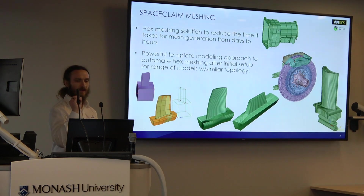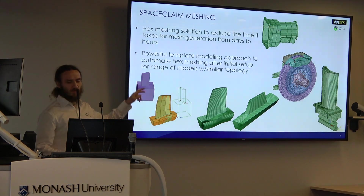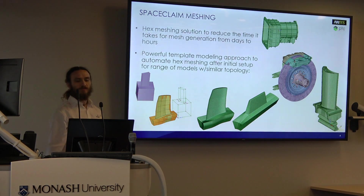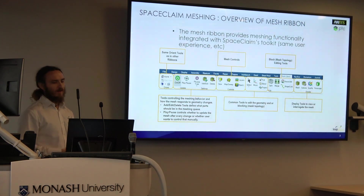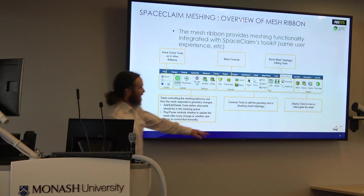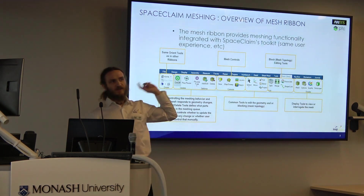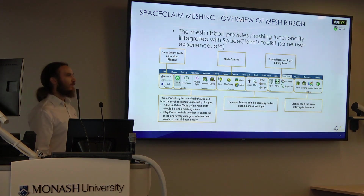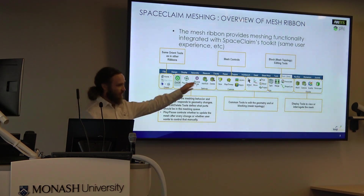A side effect of having these new interactive tools is that we can do some template modeling — I'll explain that when it comes up. These are the new tools. If you open up SpaceClaim, you'll see a new mesh bar. It says beta because this screenshot was taken in R1; in R2, the beta label has gone away. So we have all these new tools across here.